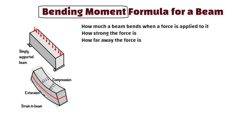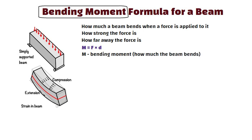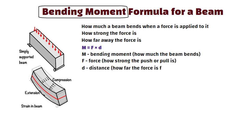The formula is M is equal to F into D, where M is the bending moment — that is how much the beam bends — F is the force, how strong the push or pull is, and D is the distance, how far the force is from the point you are looking at.